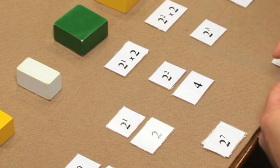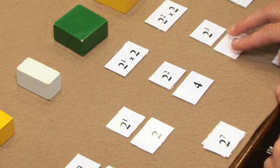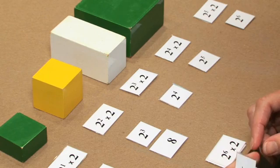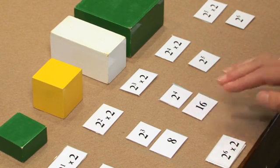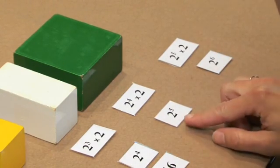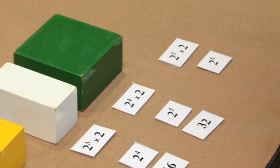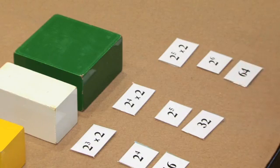The students should know two cubed is equal to eight. Here we have two to the power of four, or two times two times two times two, which is equal to sixteen. I would let the students work on the next two and tell me that two to the power of five equals thirty-two. Two to the power of six equals sixty-four.